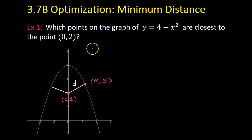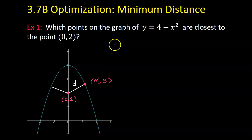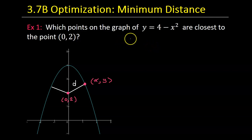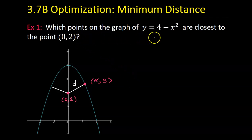This video is about optimization. That's where you try to achieve the best possible outcome given a certain set of circumstances. In this case, we are trying to find the minimum distance between two points. Which points on the graph of y equals 4 minus x squared are closest to the point (0, 2)?